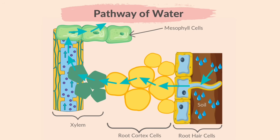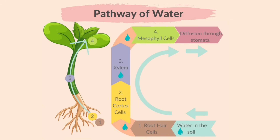Now let's learn about the pathway taken by water through the root, stem, and leaf. Water first enters the root hair cells from the soil through osmosis, because the soil water has a higher water potential than the cytoplasm of the root hair cell. From the root hair cells, water passes into the root cortex cells, then travels into the xylem, up the stem to the leaves, and into the mesophyll cells.